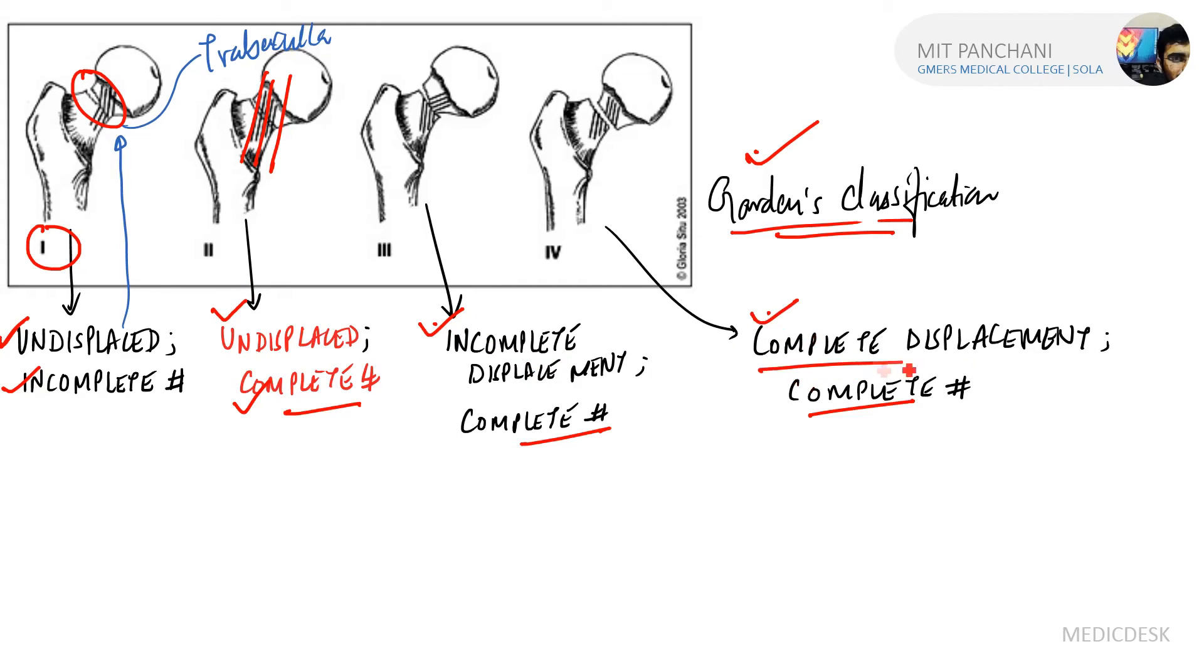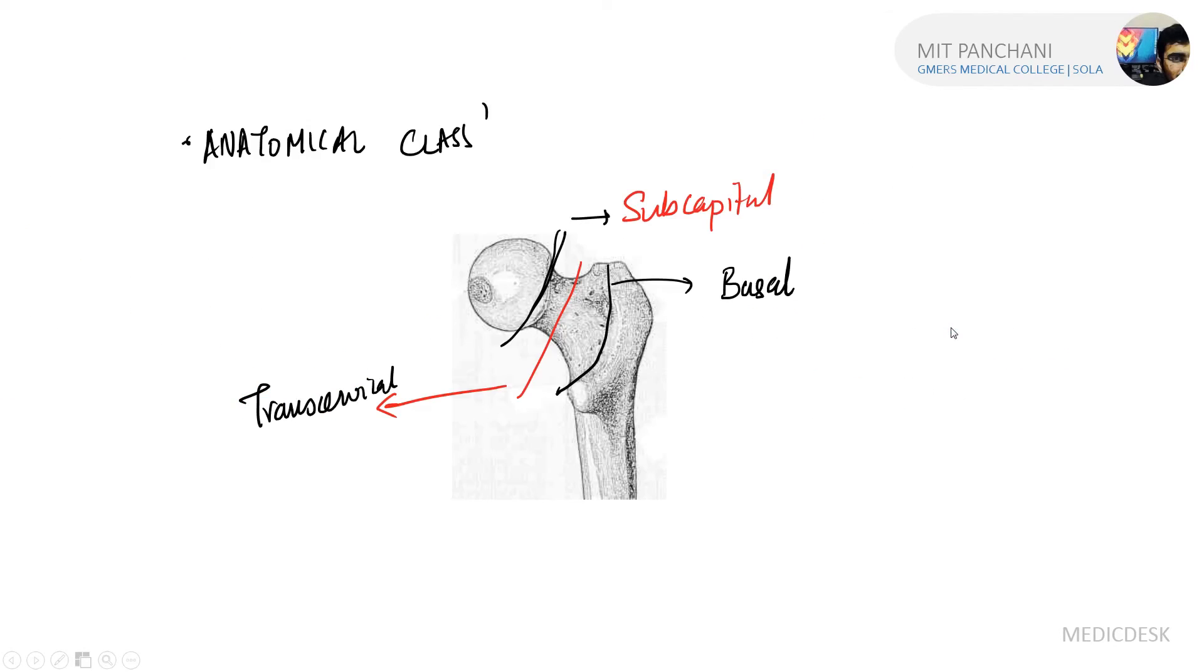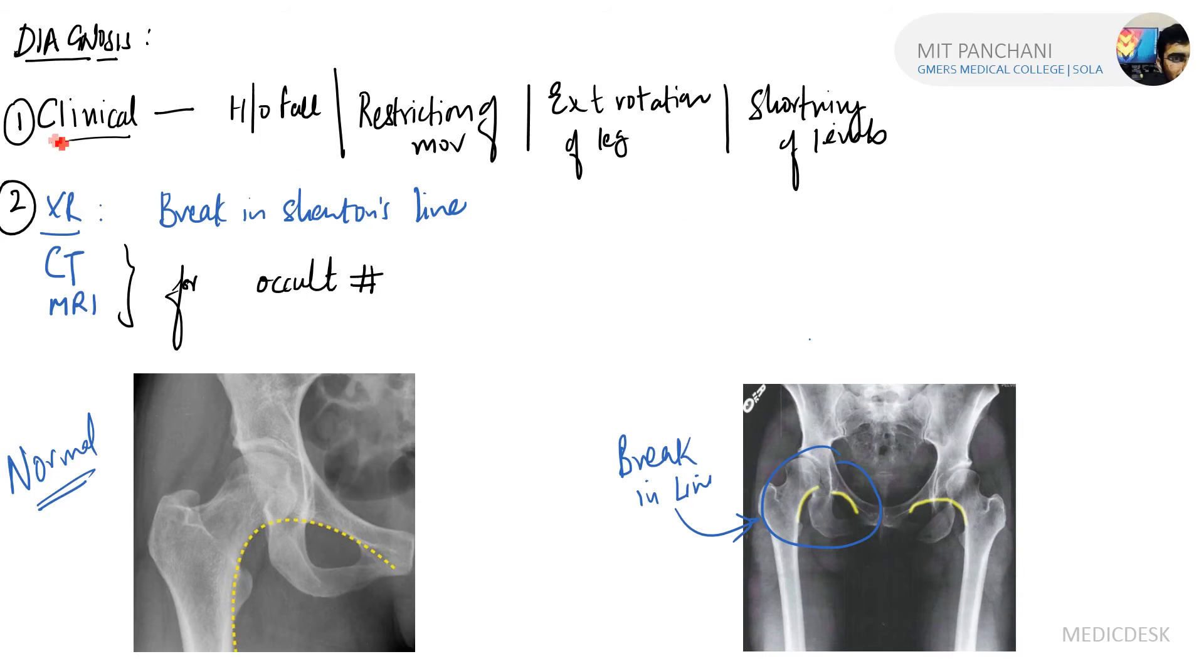The third classification is anatomical classification, where depending upon the location of the fracture, it is either subcapital, transcervical, or basal. For diagnosis, there are clinical grounds like history of fall, restriction of movement, external rotation of the leg, and shortening of the limb.